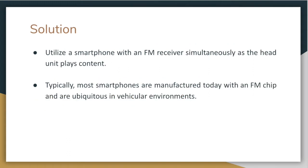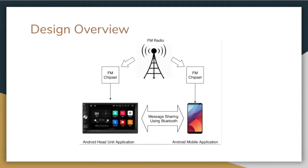To bridge this limitation, the key idea is to use FM receivers in smartphones to scan available FM stations, analyze their RDS, build a map of stations that could potentially be available for FMHOP clients to use, and then tune the car's FM receiver. Many smartphones are manufactured today with an FM chip and are ubiquitous in vehicular environments, making them well-suited for this purpose.